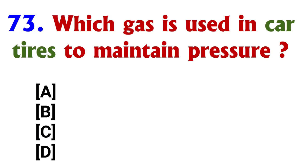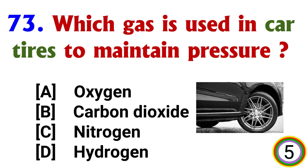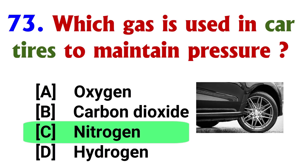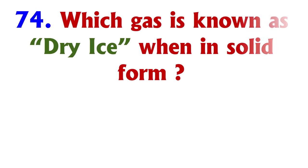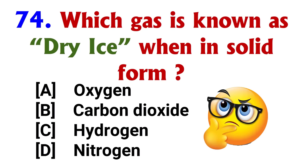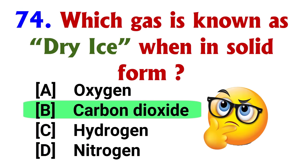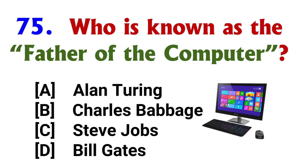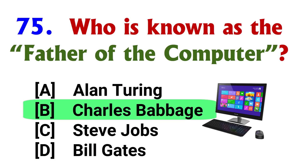Which gas is used in car tires to maintain pressure? Answer: option C, Nitrogen. Which gas is known as dry ice when solid? Answer: option B, Carbon Dioxide. Who is known as the father of the computer? Answer: option B, Charles Babbage.